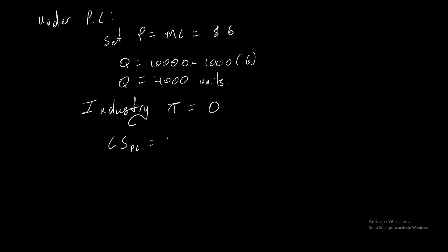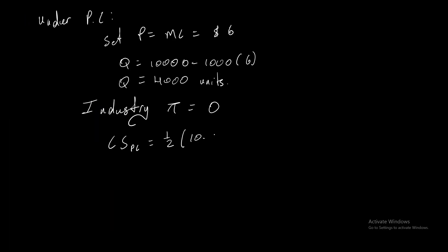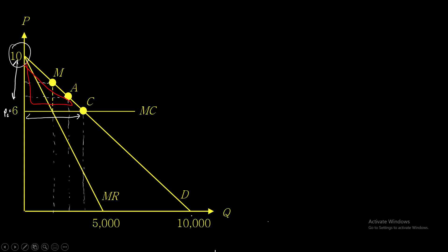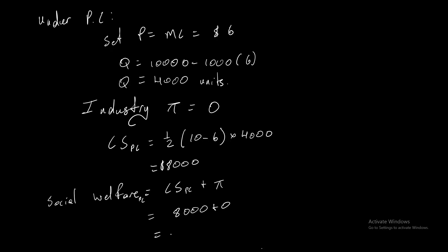Your consumer surplus under perfect competition would be a half times the length times the breadth of the triangle. The area of this triangle is your consumer surplus: half times (10 minus 6) times 4,000, which equals 8,000. Your social welfare equals consumer surplus plus profits. Profits were zero and consumer surplus was 8,000, so social welfare is 8,000.